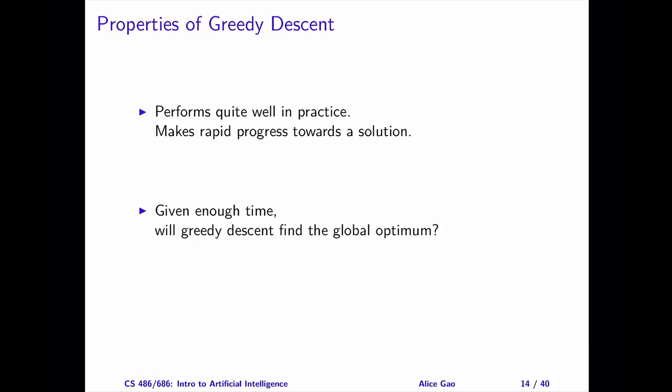We cannot improve it locally. However, this state might not be the global optimal. If a problem is challenging, then its search space often has a large number of local optimums.